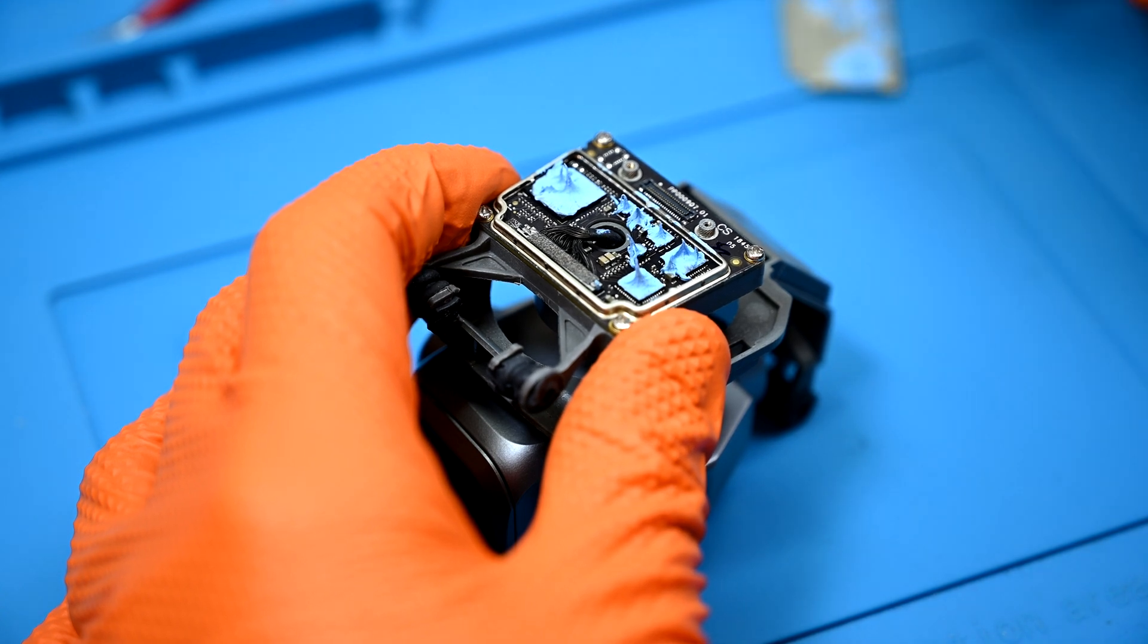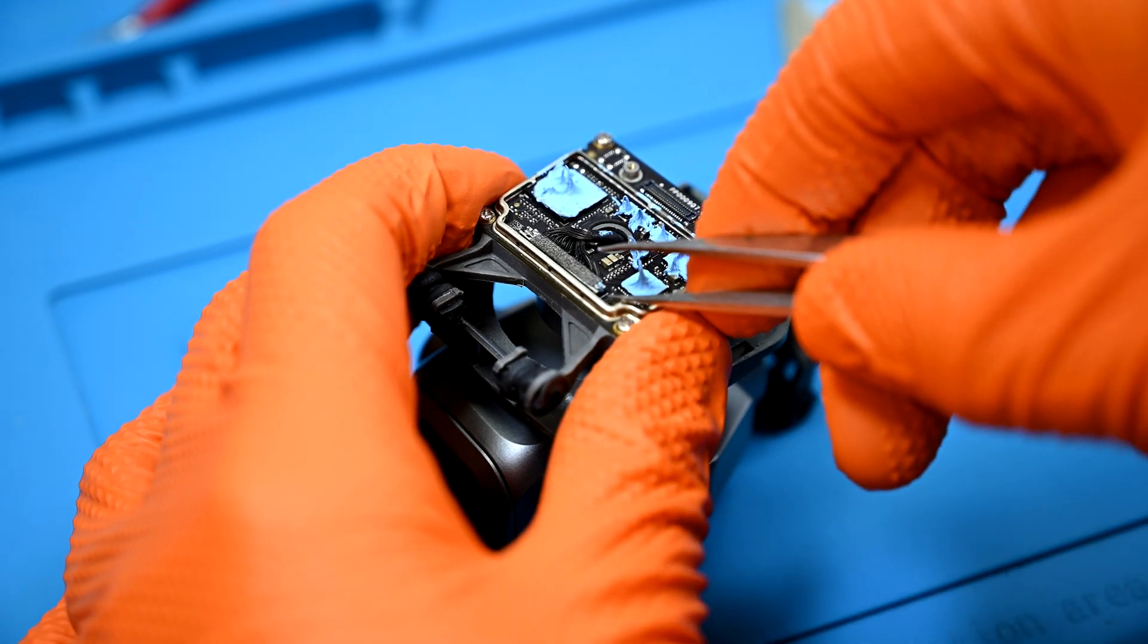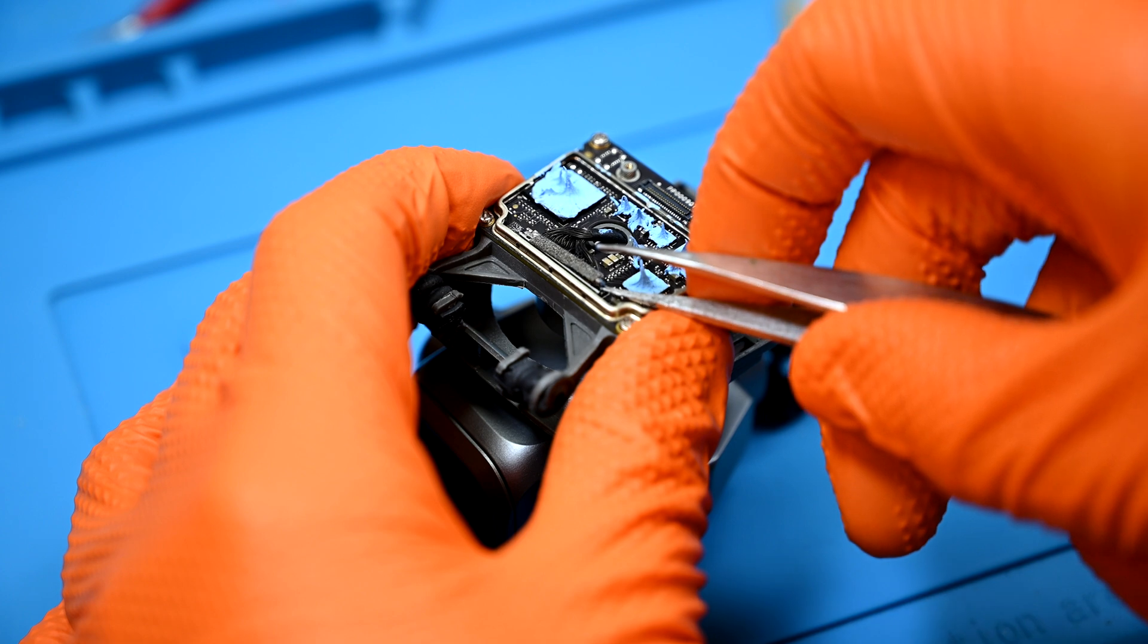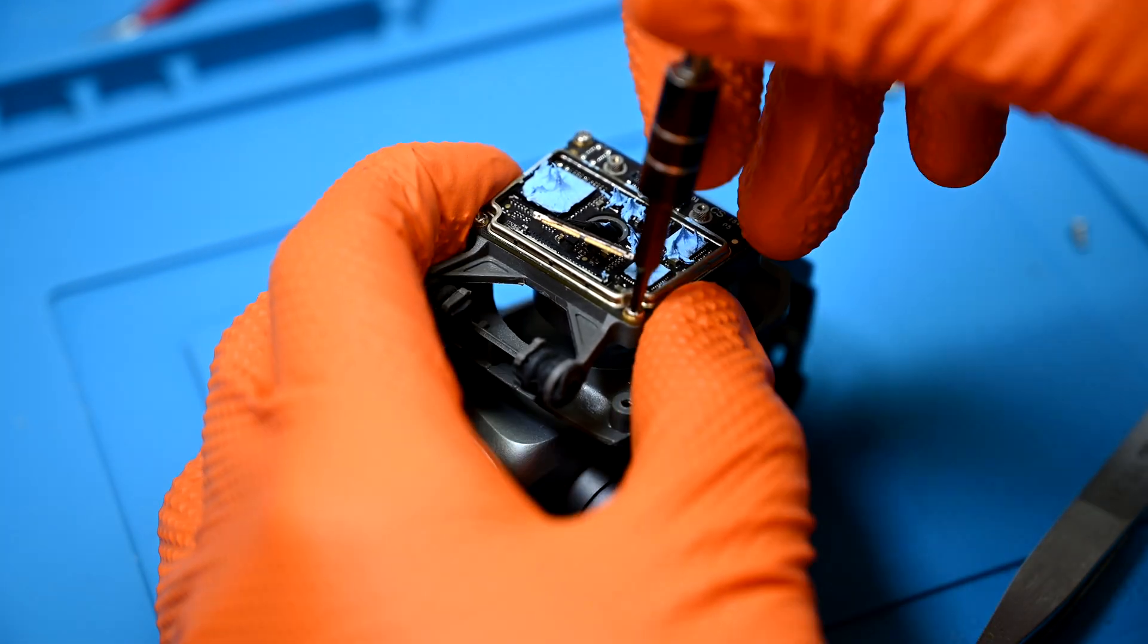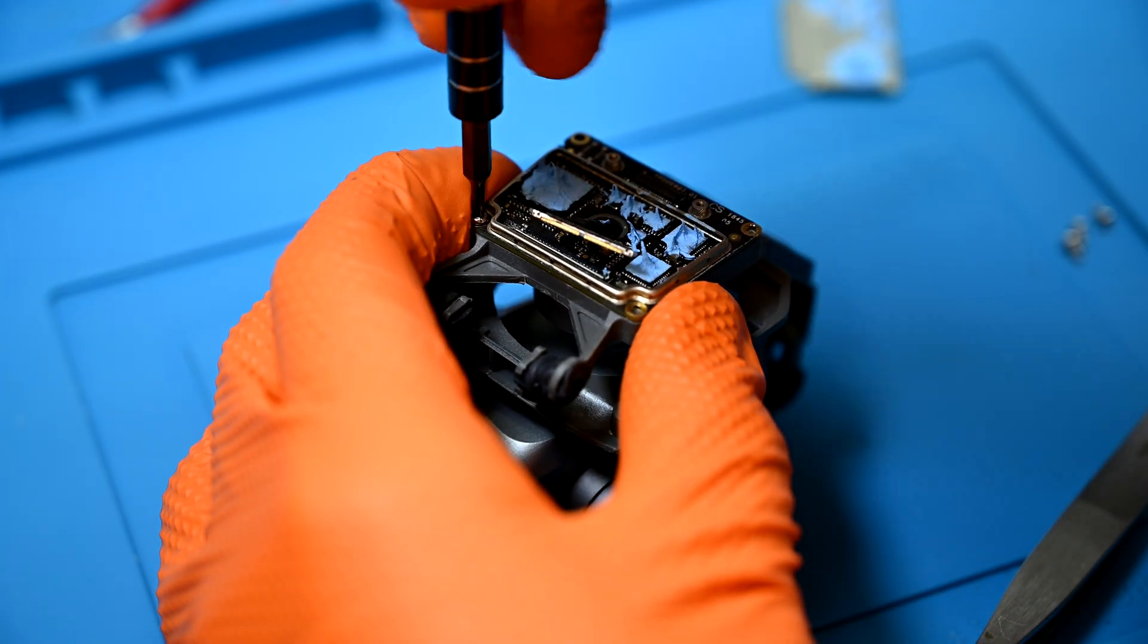The camera transmission harness needs to be disconnected very carefully here. This bundle of tiny wires is very easy to rip and is actually the source of our issue here. Four screws secure the control board to the shock mount.